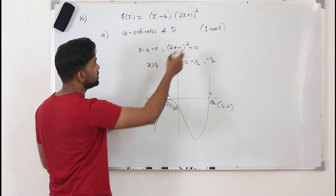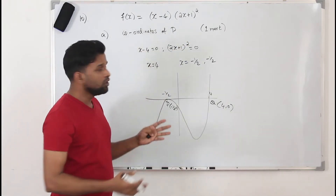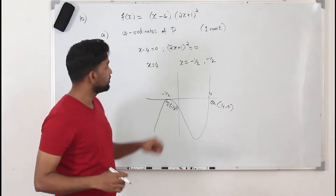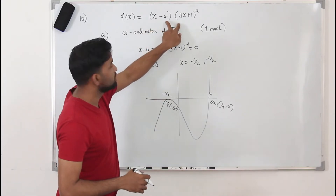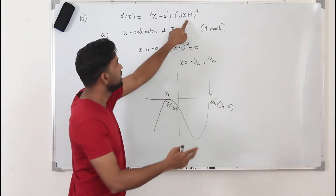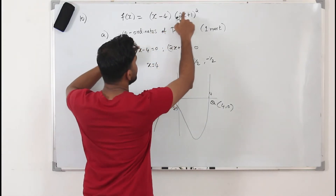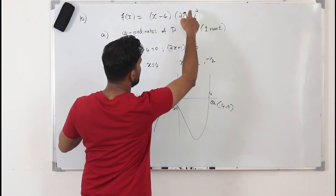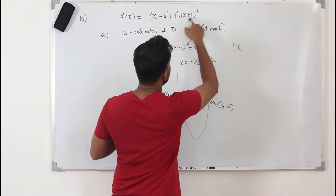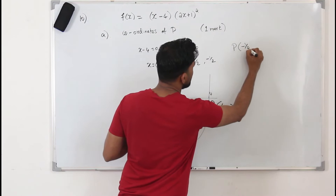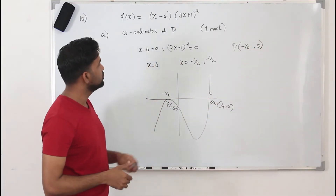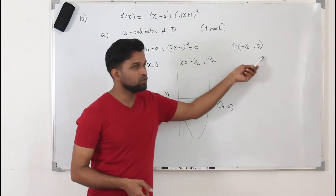You don't need to draw all this. If you've learned sketching cubic graphs, by looking at the function you can straight away say this has two equal solutions, so the graph will touch the x-axis at that point. The coordinate of P is: when you solve 2x plus 1 squared equals 0, you get x equals minus half, and the y-coordinate will be 0. So the coordinates of P are (−1/2, 0).